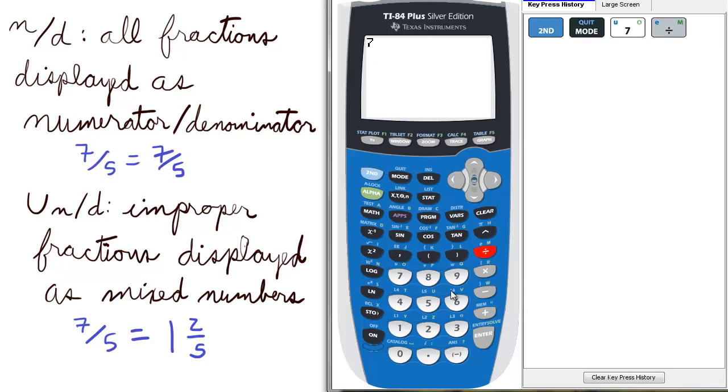Let's have 7 divided by 5 be displayed. First it's displayed as a decimal. Now to change that to a fraction, we press math, enter, enter. And the fraction is 7 fifths.